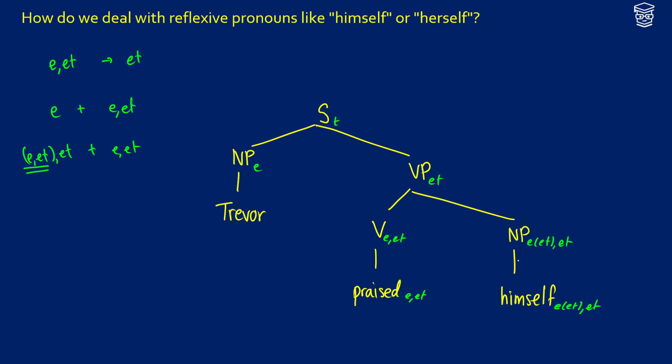So what does himself look like in this case? Well, let's think about what it's trying to do. At the end of the day, we're trying to say that whatever the subject of the praise is, so praised X, it's really like praised XX. So there's some sort of binding involved. We also know, because it's an EET, that there's some sort of transitivity here.